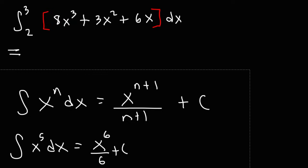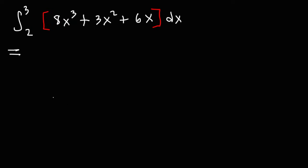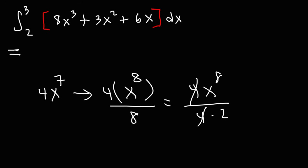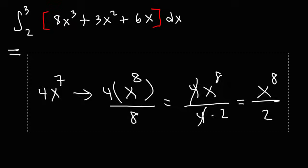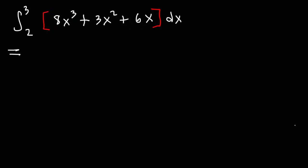So let's say if we want to determine the antiderivative of 4x to the seventh. So we have a constant times x to the seventh. First rewrite the constant and then find the antiderivative of x to the seventh. So add 1 to 7, that's 8, and then divide by that number. And after that you can reduce it. So 8 is 4 times 2. We can cancel the 4 and so the answer is going to be x to the 8 over 2. So that's how you could find the antiderivative of monomials.